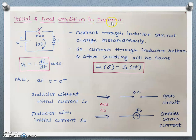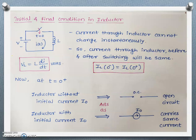Now initial and final conditions in an inductor. The circuit consists of a voltage source, a switch which is going to close at t=0, and an inductor. The current i(t) flows through the circuit. The inductor has the property that it stores energy in electromagnetic form, and the current through the inductor cannot change instantaneously. That means the current through the inductor before and after switching will be the same: iL(0⁻) = iL(0⁺). The voltage-current relationship for an inductor is vL = L · di/dt.